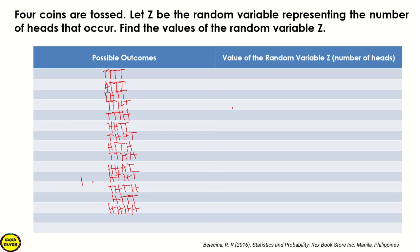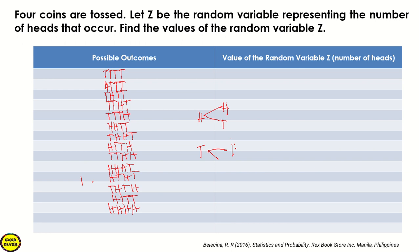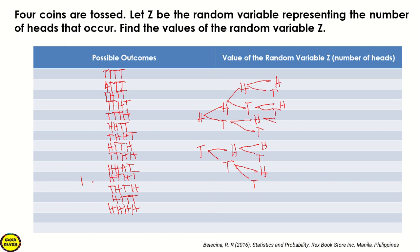Let's use the space on the other side. So we have head and tail. Since we have 4 coins, the second coin also has head and tail. Then another head and tail, another head and tail, and one more head and tail for the third level. Since it's 4 coins, we add one more: head and tail. You can use a tree diagram to avoid confusion.